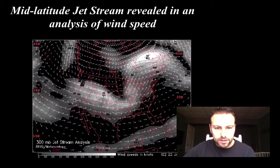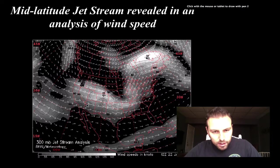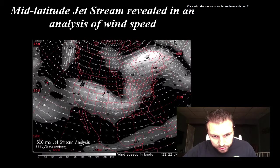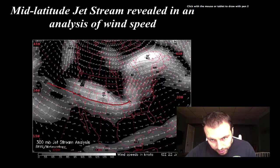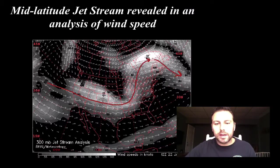Here we can see a mid-latitude view. Remember, we're mid-latitude — about 45 degrees north, give or take a little bit. You can see here the jet stream coming down, dipping southward, then there's a jump northward, and then it dips south again. That is our jet stream.